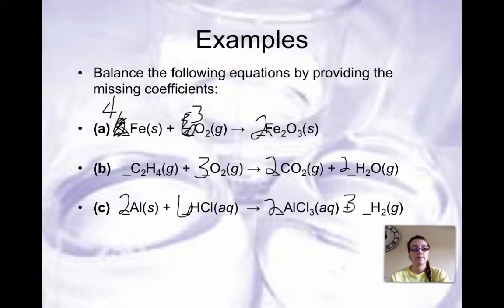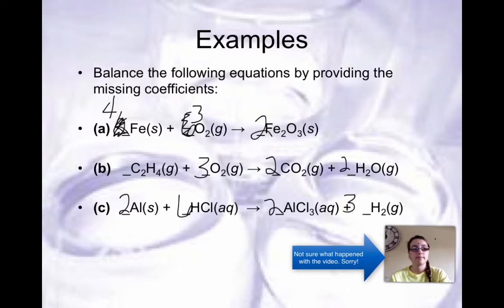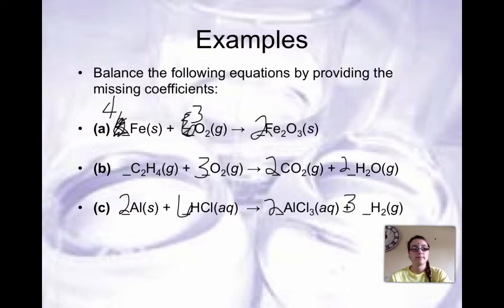For example B, you have a combustion reaction with coefficients 1, 3, 2, 2. For example C, the coefficients are 2, 6, 2, 3 — you had an odd number of chlorines, so you had to double that. If you need extra practice with balancing equations, look over sample exercise 3.2 in your text. Feel free to send me an email if you still have questions.